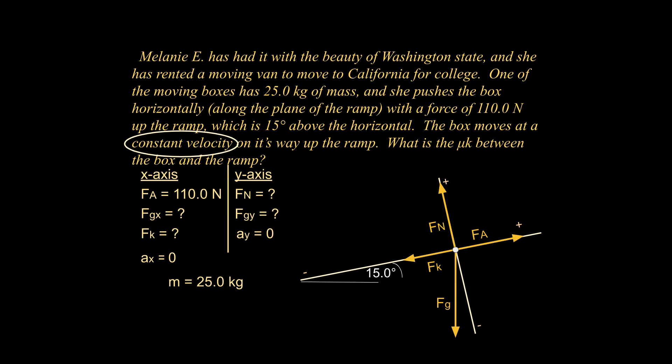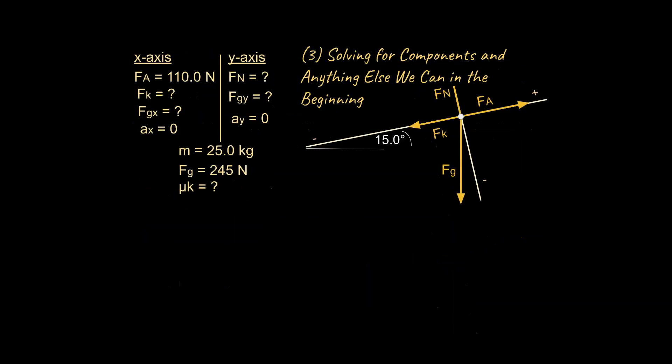Notice this is not 9.81 meters per second squared in the negative direction because it's not being dropped. It's not in freefall. And even if it was, our y is no longer straight down. So we've done a bit of our preliminary work.